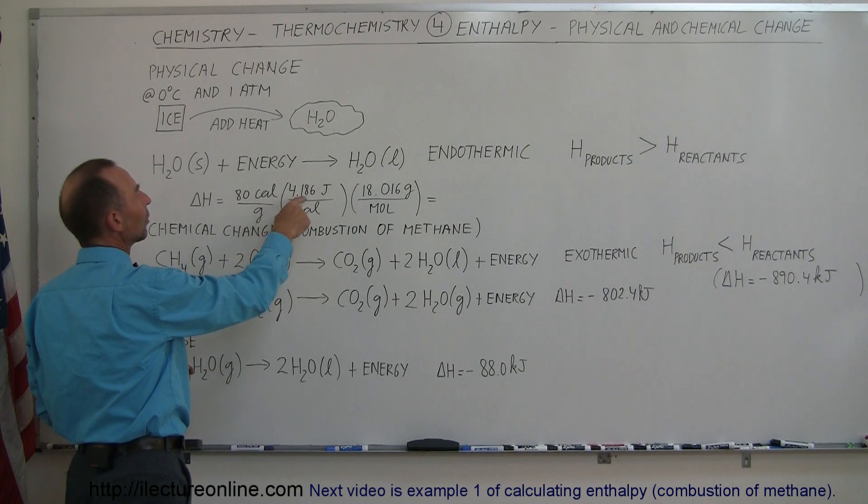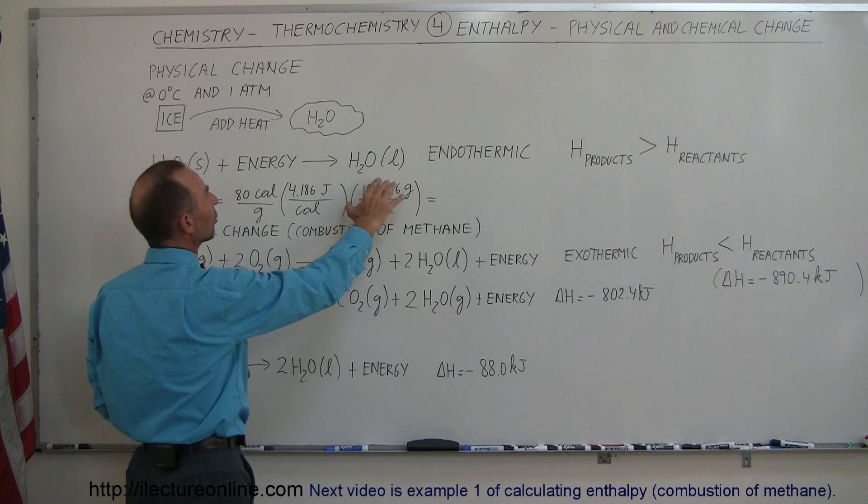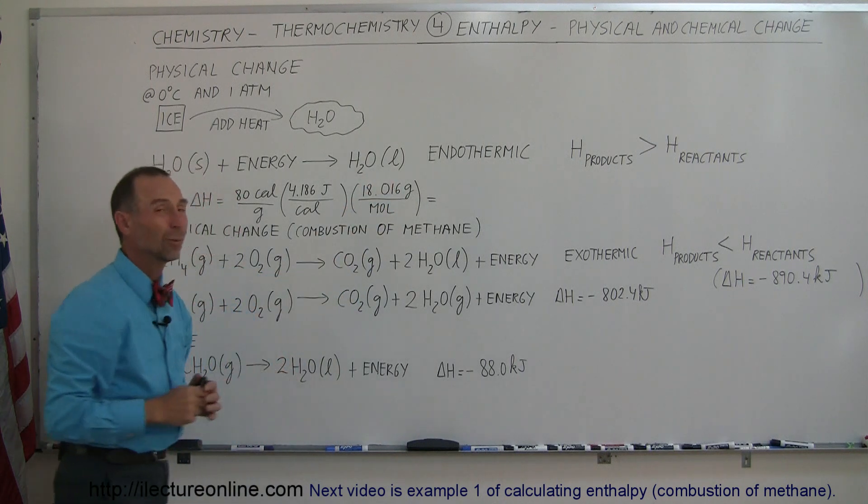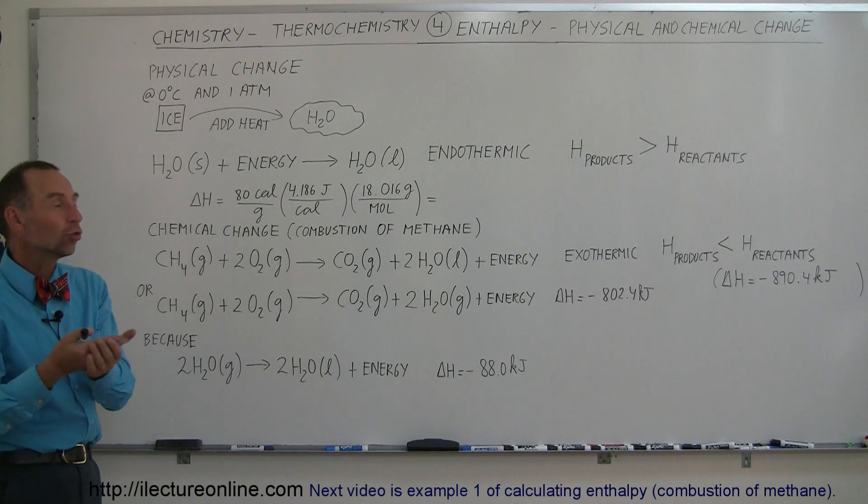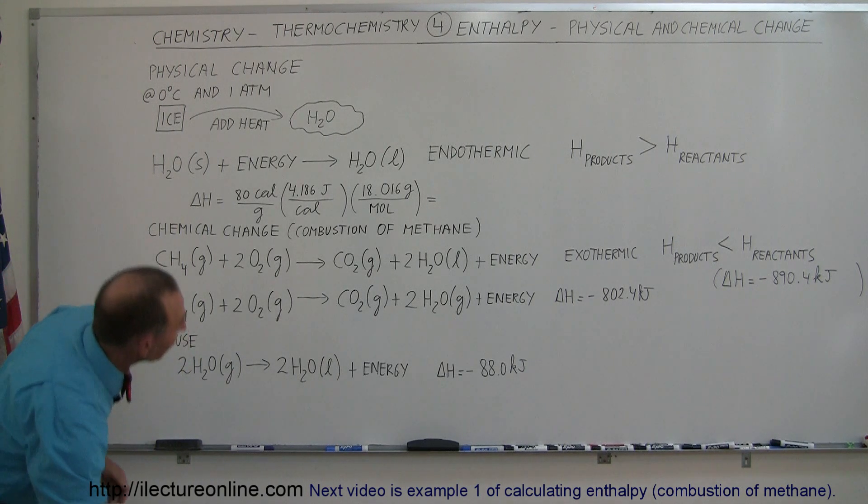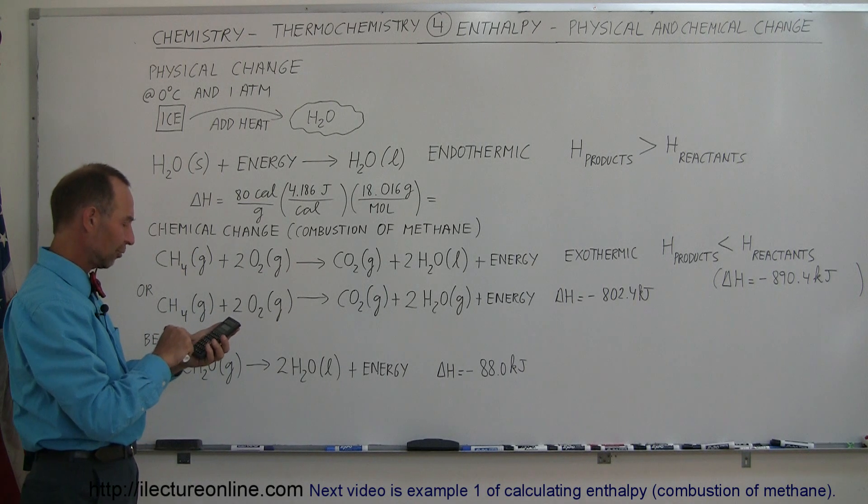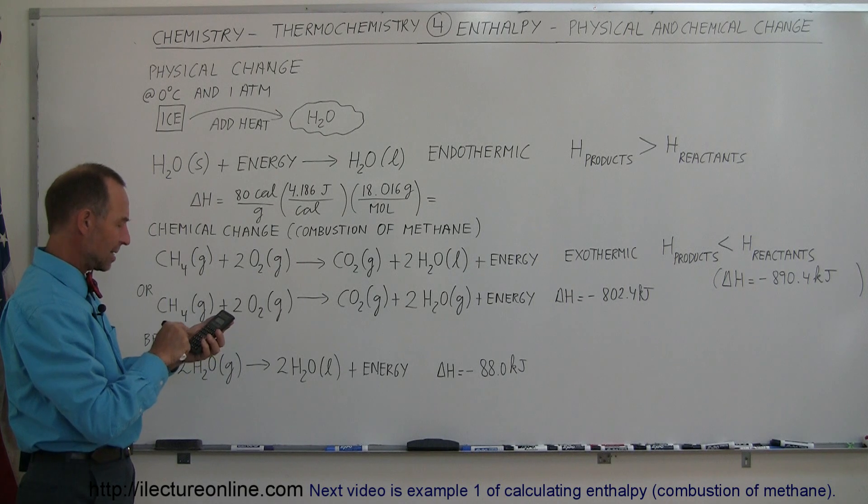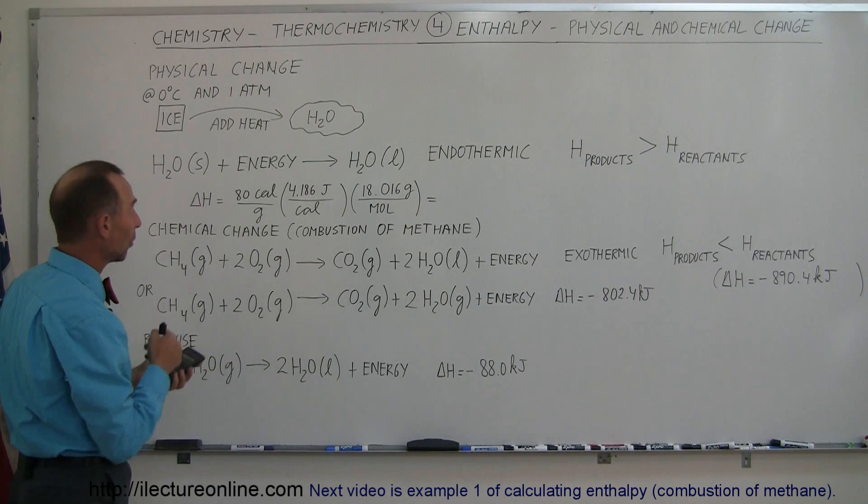A calorie is 4.186 joules, so converting that to joules, and then we have to convert that to grams per mole, because when we talk about the change in enthalpy, we talk about how many joules per mole of the substance we need to change it. So here, with the calculator, let's find out how much that is.